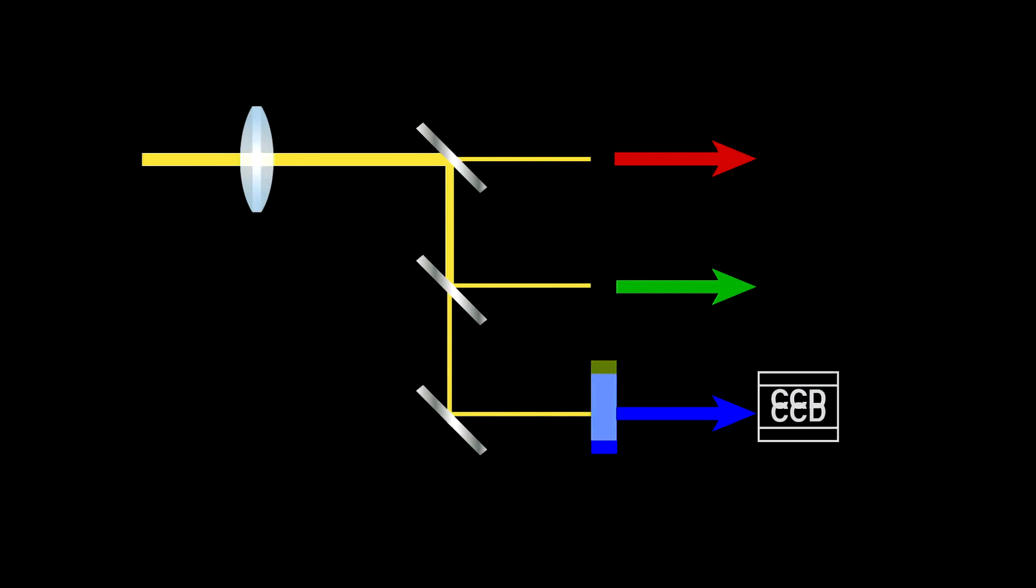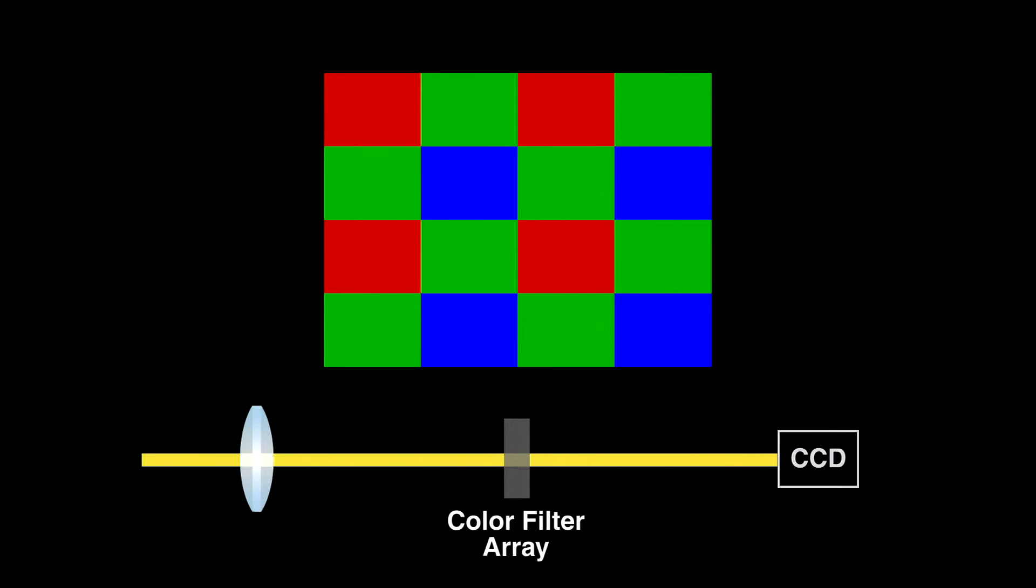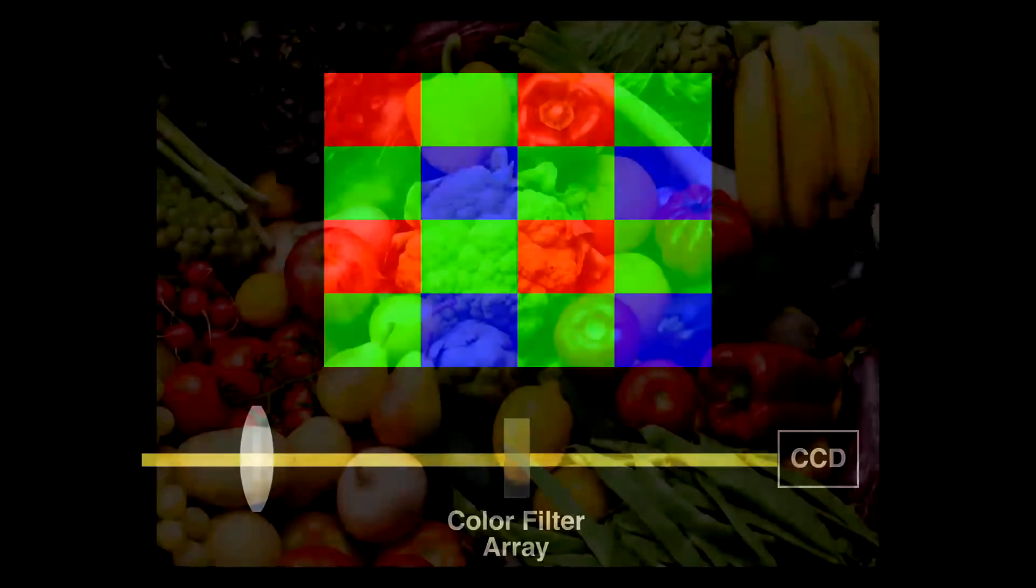Instead of using three separate CCDs, they use a little math, so they only need one. In this consumer camera, they cover that single CCD with a filter with red, green, and blue pixel-sized sections. This creates an image coming out of the CCD that's a mosaic of these three colors.